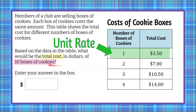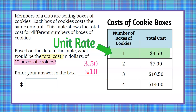So to find 10 boxes of cookies, I'm going to multiply $3.50 by 10. I can't use the table any further because it doesn't extend to 10 boxes — it only goes as far as four boxes. So $3.50 times 10 is going to be the cost for 10 boxes of cookies.